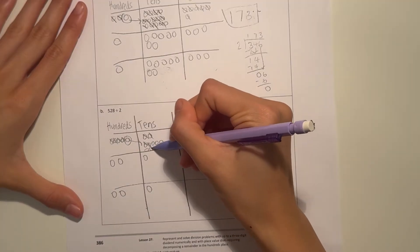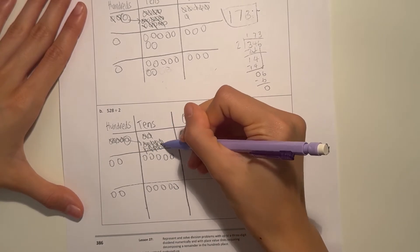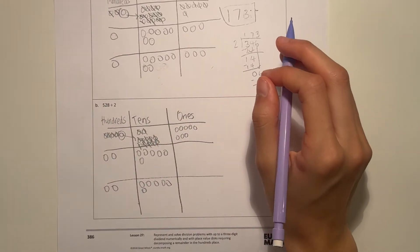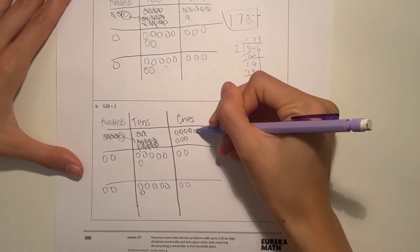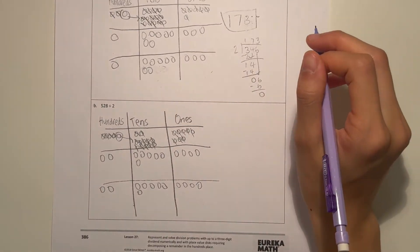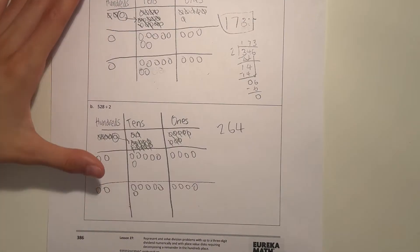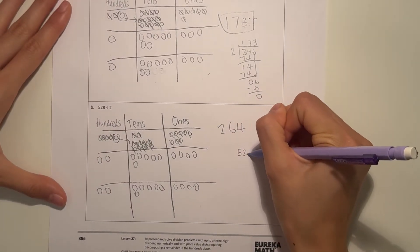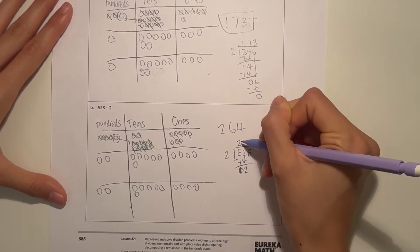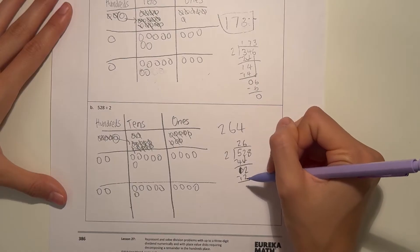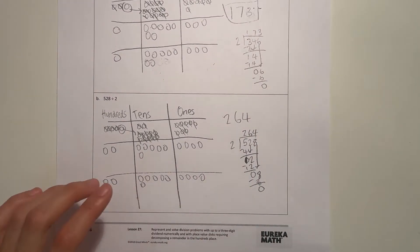So now let's divide the tens — we count out twelve tens and divide them evenly. Then we move on to the ones, because there's nothing to regroup here. So now we have two hundreds, six tens, and four ones — two hundred sixty-four. We can show our work with long division: five twenty-eight divided by two. Two goes two times into five, minus four, one left over. Bring down the two — two goes six times into twelve. Zero, bring down the eight — two goes four times into eight. Zero remaining, so our answer is two hundred sixty-four.